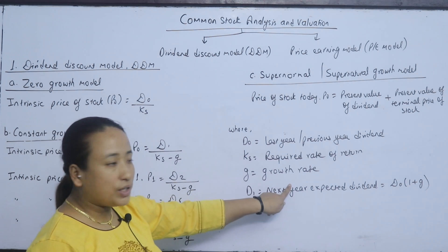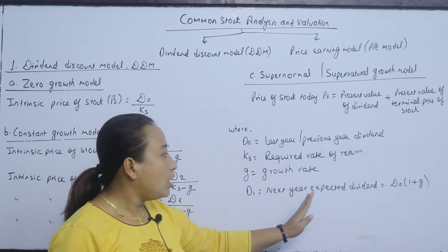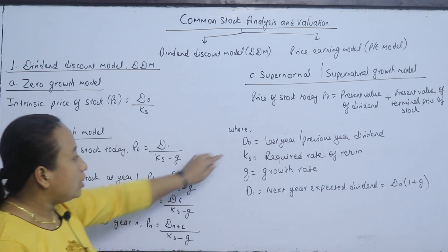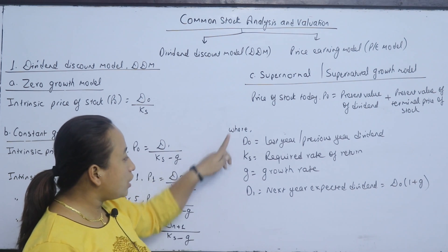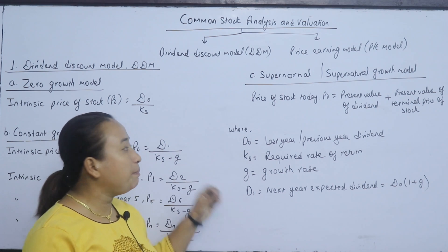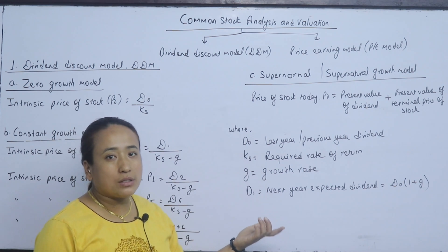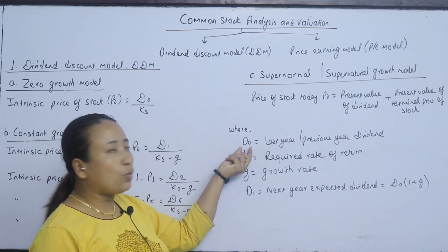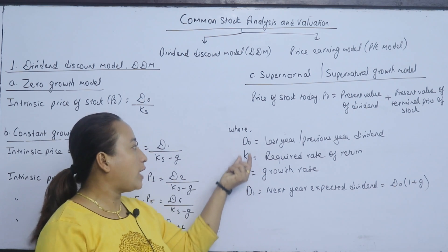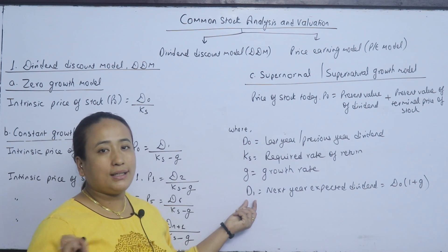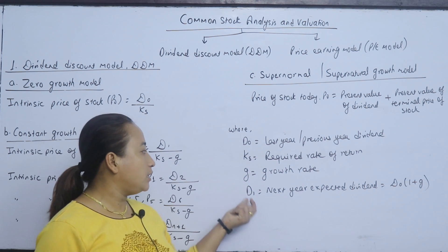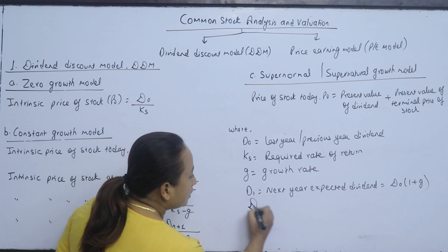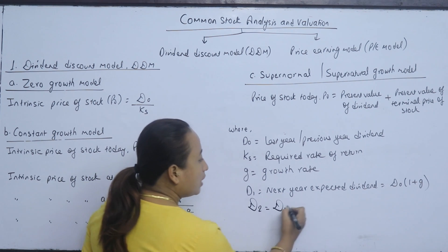Here, G is the growth rate, and D1 is the next year's expected dividend. The other year's dividend is D0 multiplied by (1 + G). To check D0 and D1, D0 is the dividend previously paid — currently distributed. To find D1 from D0, use D0 × (1 + G).